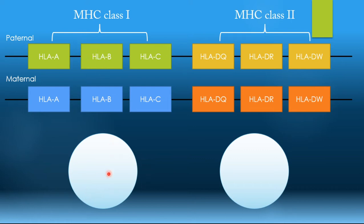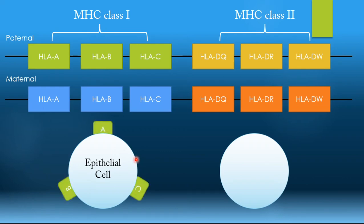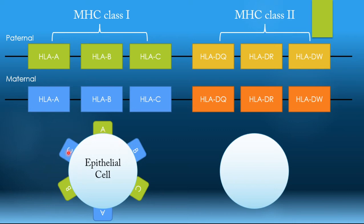Consider an epithelial cell — a normal nucleated cell capable of expressing MHC class 1 molecules. On it you will find MHC class 1 molecules from the HLA-A gene, another from the B gene, and another from the C gene — all from the paternal side. Since it expresses co-dominance, the maternal HLA-A, B, and C genes will form their own MHC class 1 molecules. So any nucleated cell in the body will have at least three paternal and three maternal different MHC class 1 molecules.